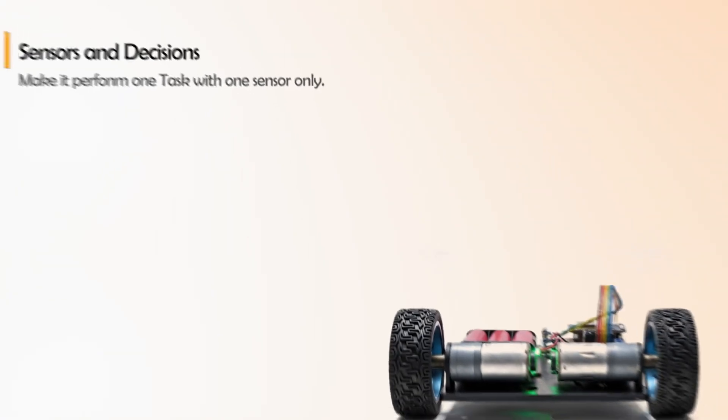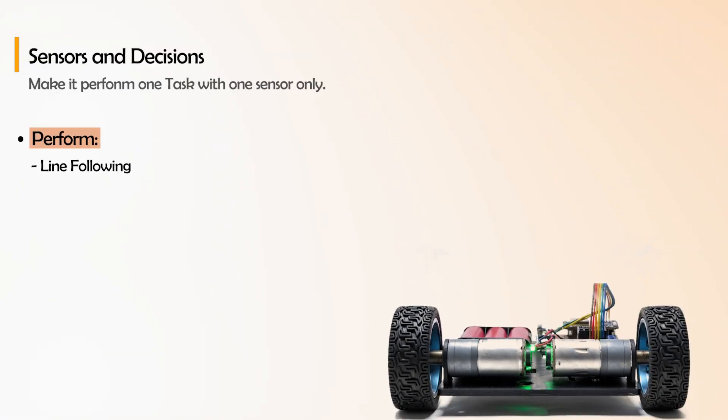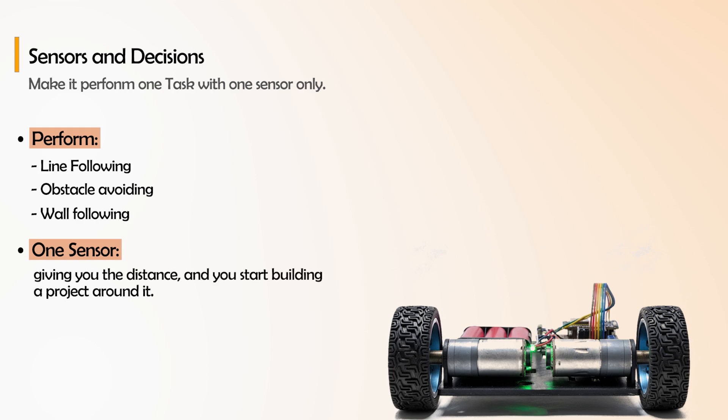Starting with an example, I would say perform line following or perform obstacle avoiding or perform wall following that requires distance measurement. So one sensor giving you the distance, and you start building a project around it - that this robot is going to do one thing, and that is avoid obstacles or going to stop near the obstacles if there is any. One basic decision because of the sensor - that's what you have to understand and learn.